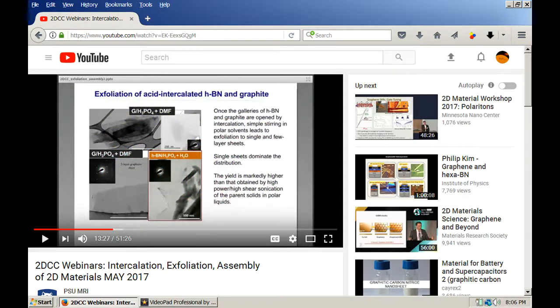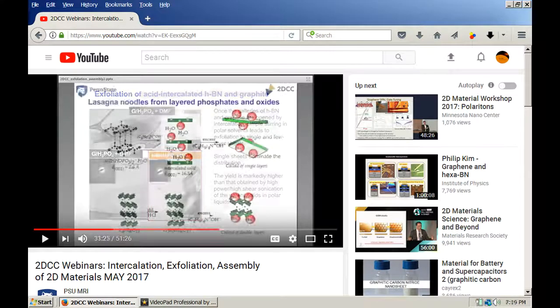In this slide, he's showing that once you have your graphite intercalated, you can simply stir in a polar solvent to exfoliate the graphite, including just water, as he has highlighted there in the third example. The cool part is that you get mostly single sheet exfoliation out of it, which means you're basically forming graphene.